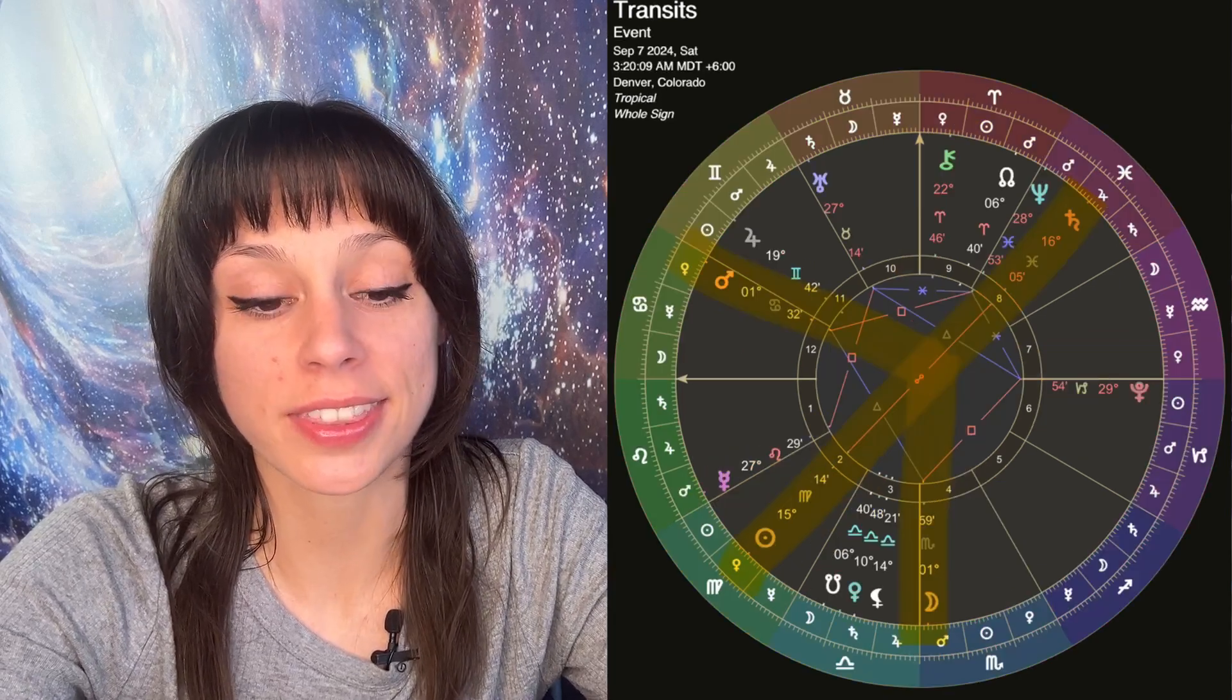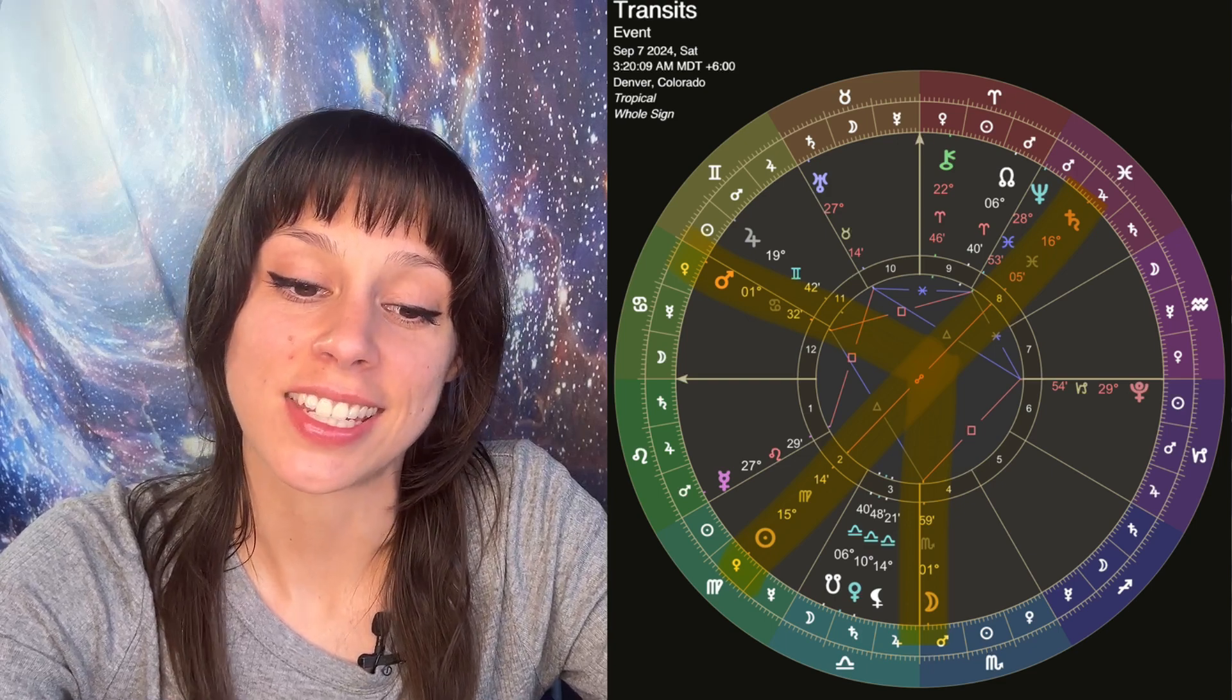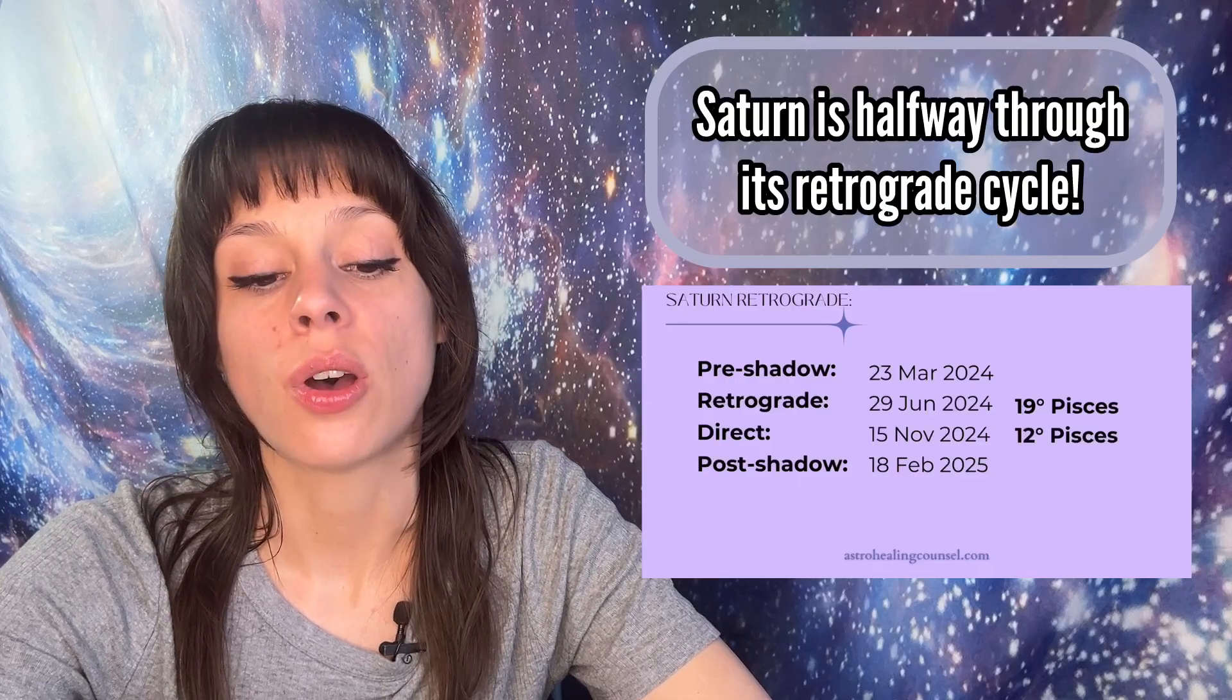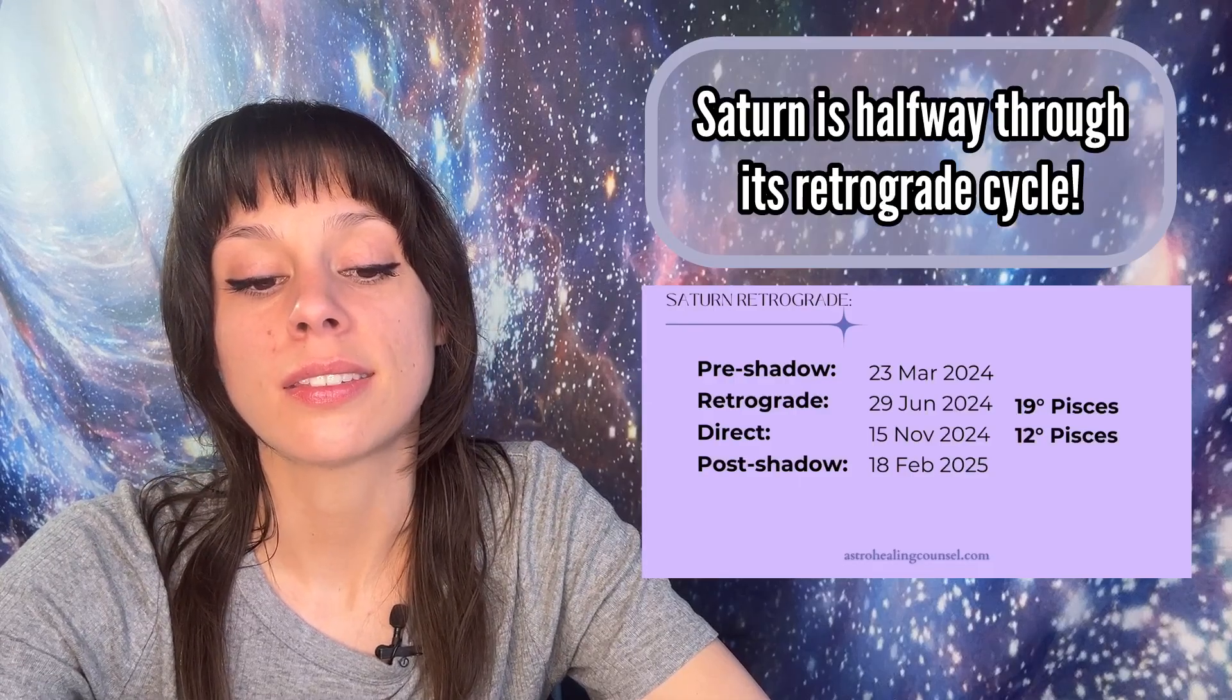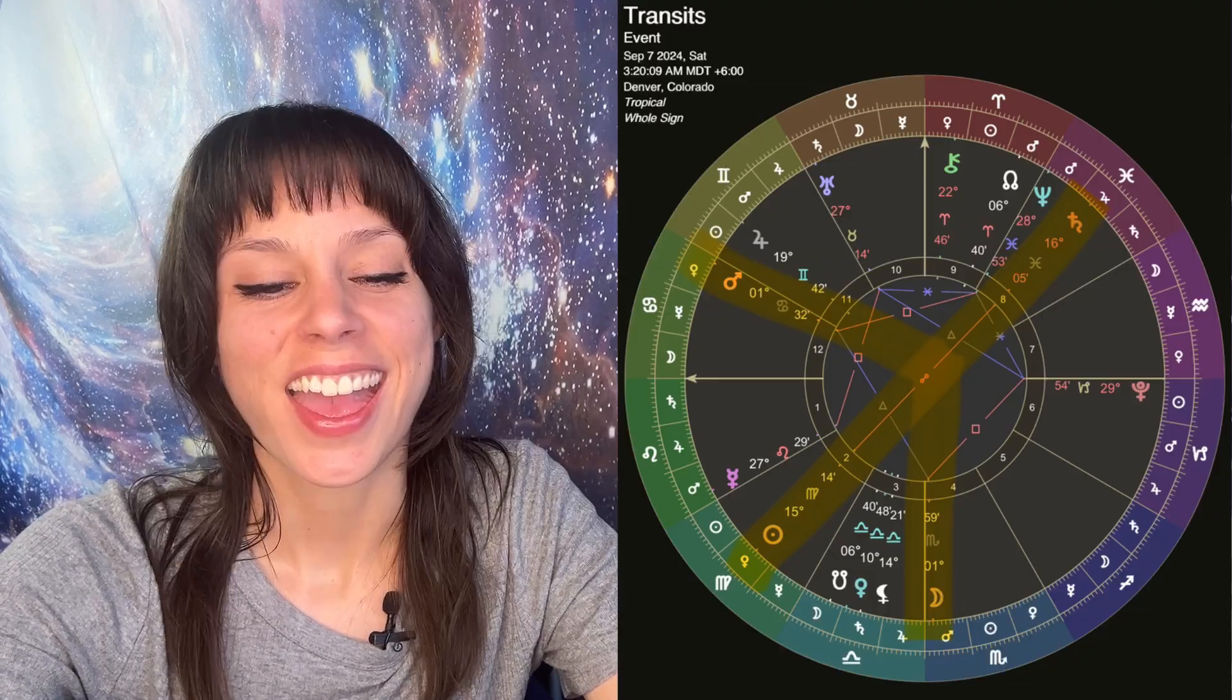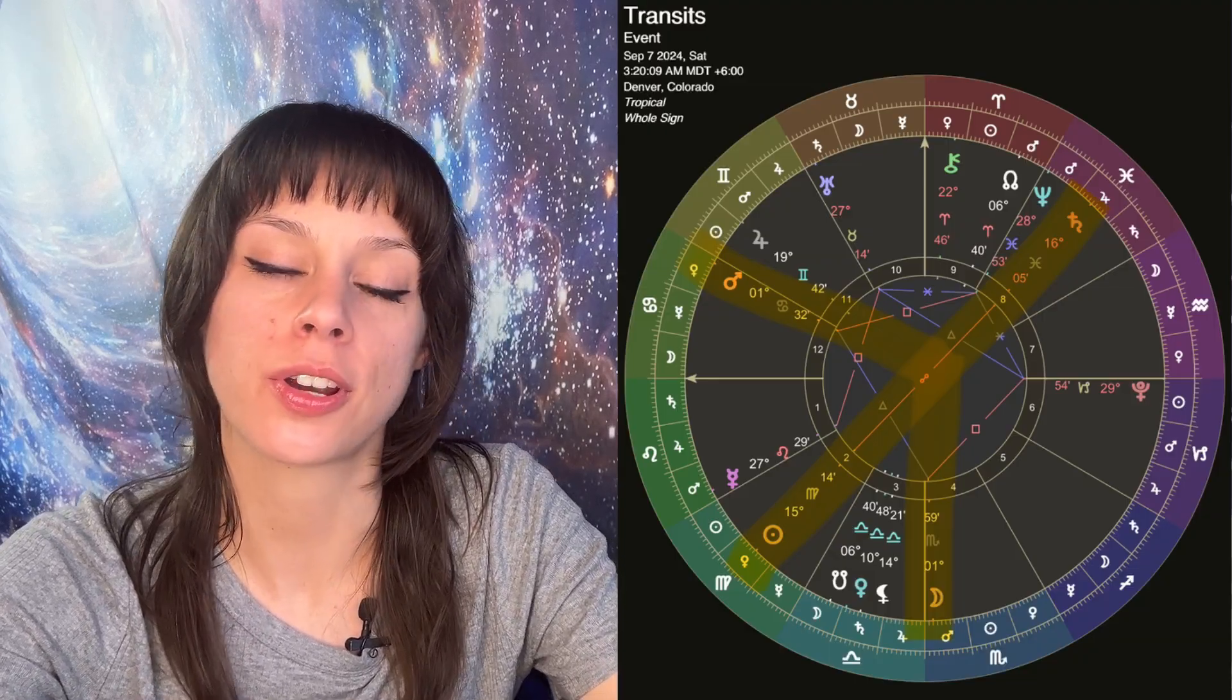Saturday, September 7th, the sun will oppose Saturn retrograde at 16 degrees of Virgo and Pisces. So this is the sun opposing Saturn retrograde. And then also, Scorpio moon makes a trine to Mars at one degree of Cancer on Saturday.